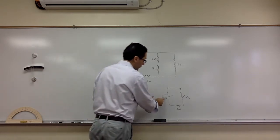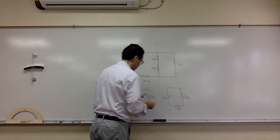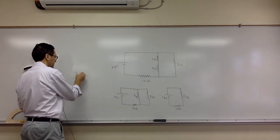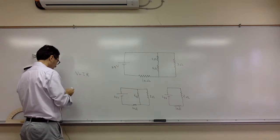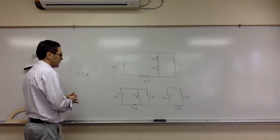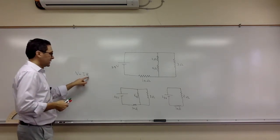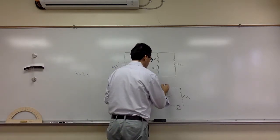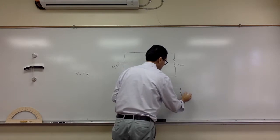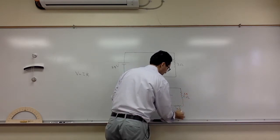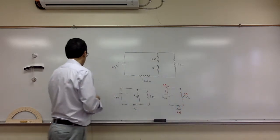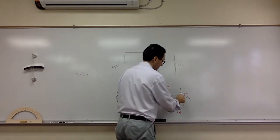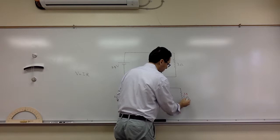We have 24 volts and 12 ohm total resistance, so the formula we're using is V equals IR. 24 equals I times 12, so the current should be two amps. For the voltage, I do V equals IR for each one — so this will be V equals IR, that's four volts.